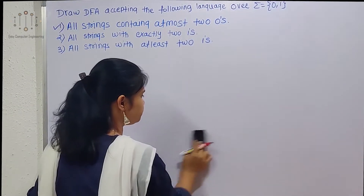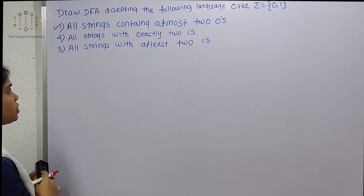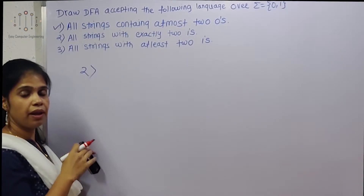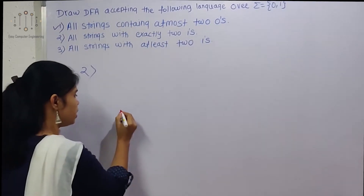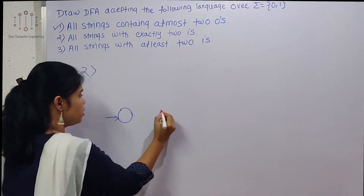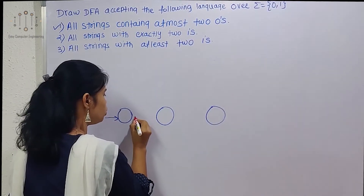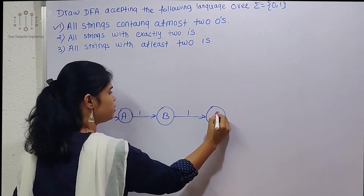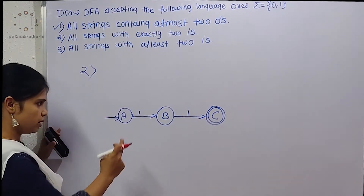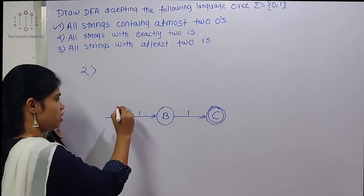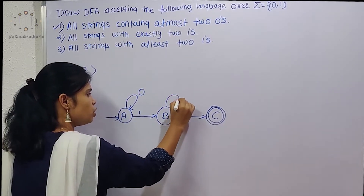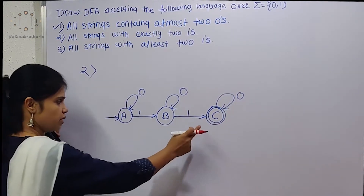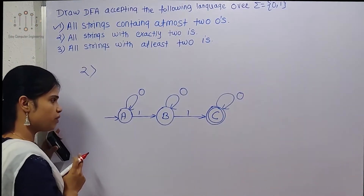The second example is: all strings with exactly two 1s. In the previous example it was 'at most', here it is 'exactly two 1s'. Again we take an initial state. We need to show exactly two 1s, so we design states and give them names. After exactly two 1s are accepted, state C becomes our final state, and A is our initial state.